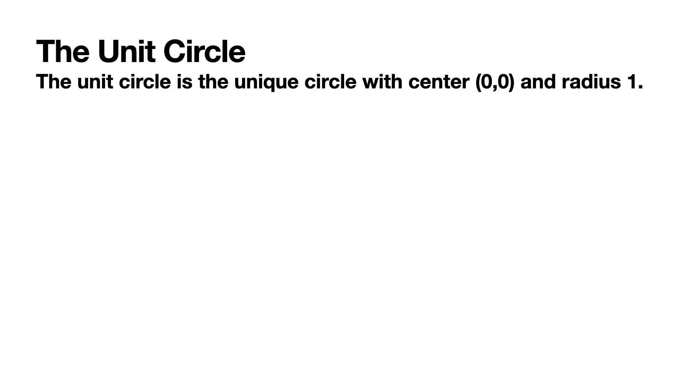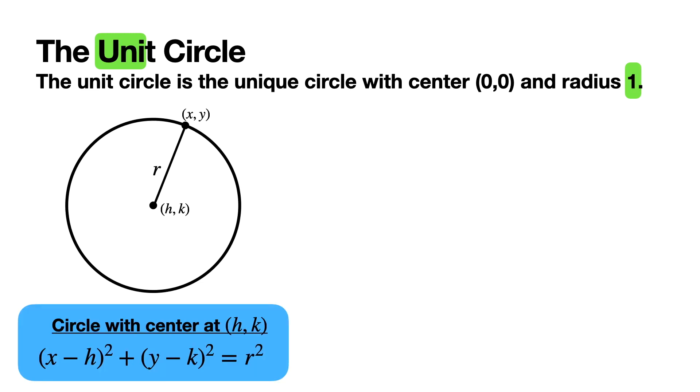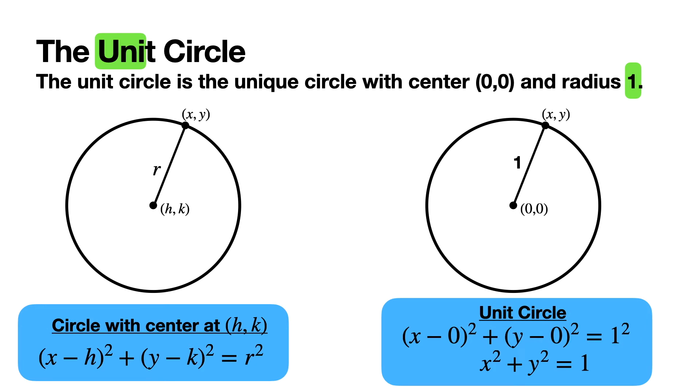There's a special type of circle that is very useful in mathematics called the unit circle. The unit circle is the unique circle with center (0,0) and radius 1. It's called the unit circle because uni means one. Here's a picture of the circle we just derived, and the unit circle is just the same circle.